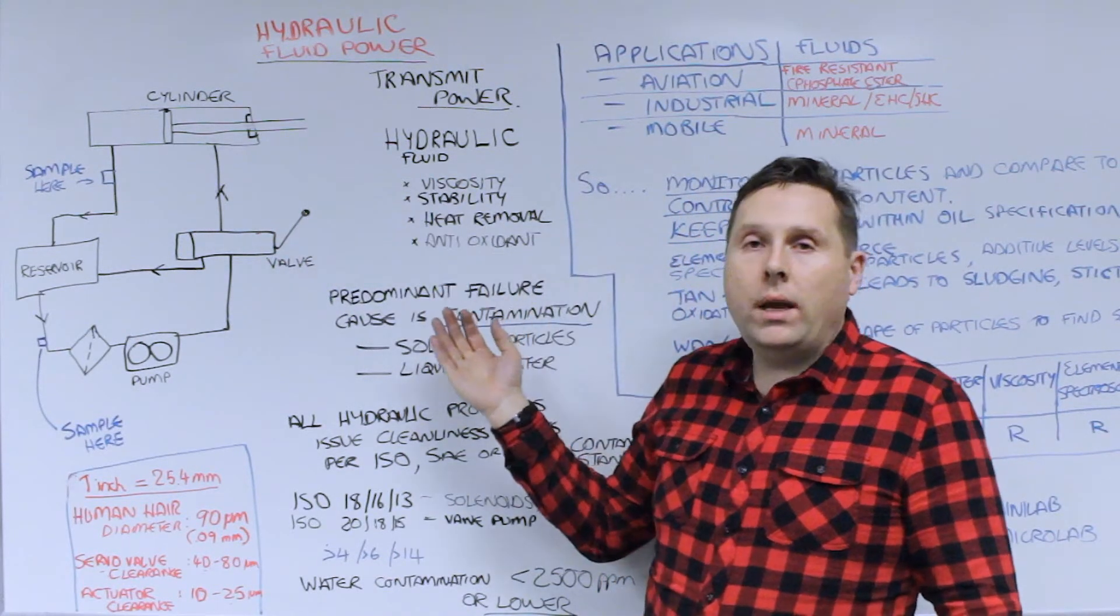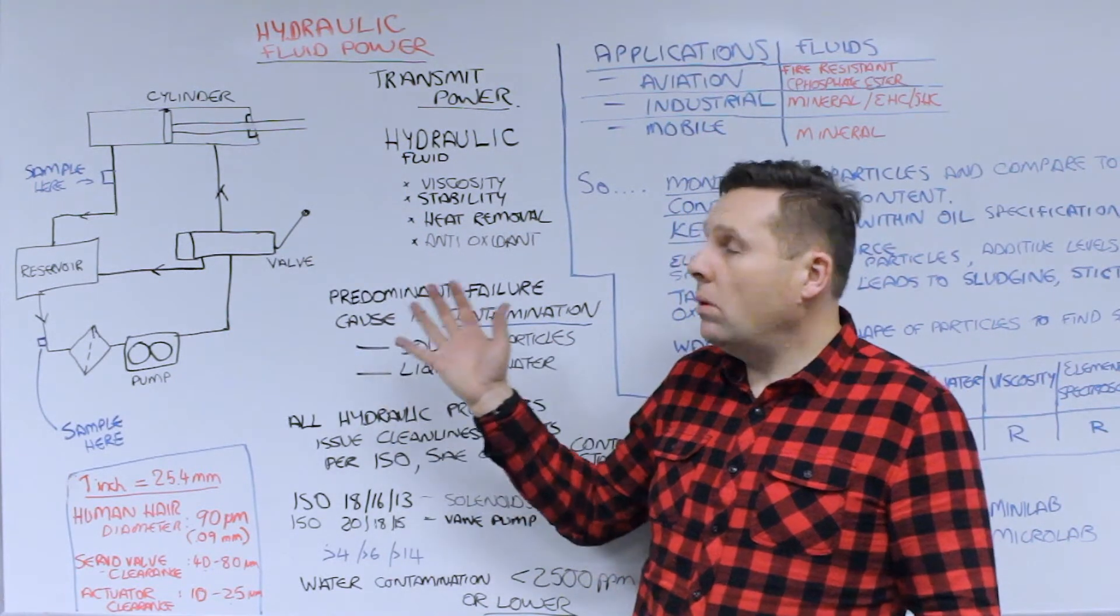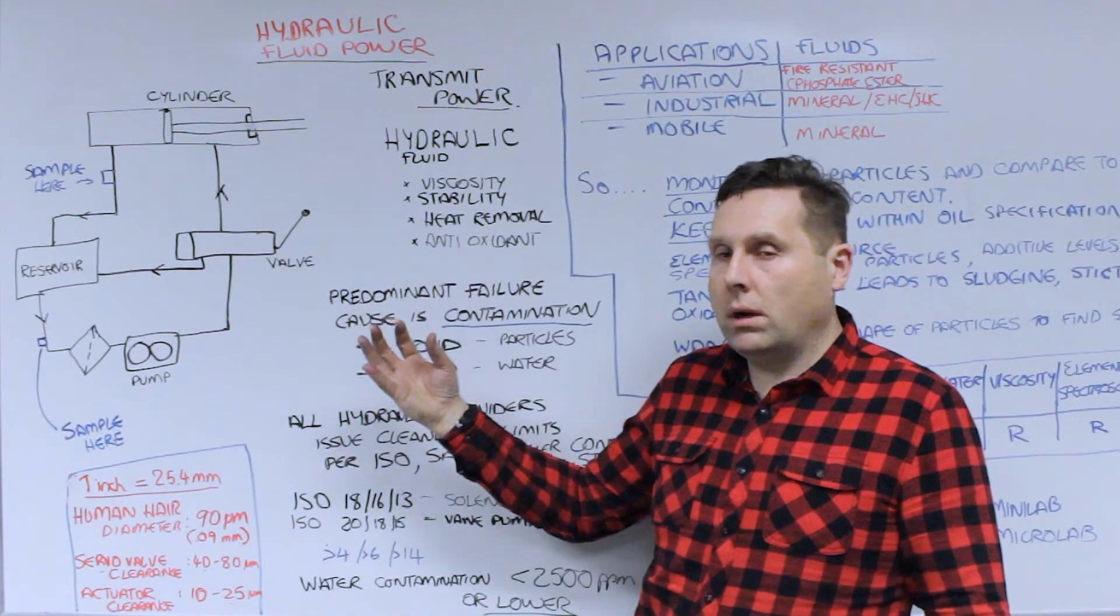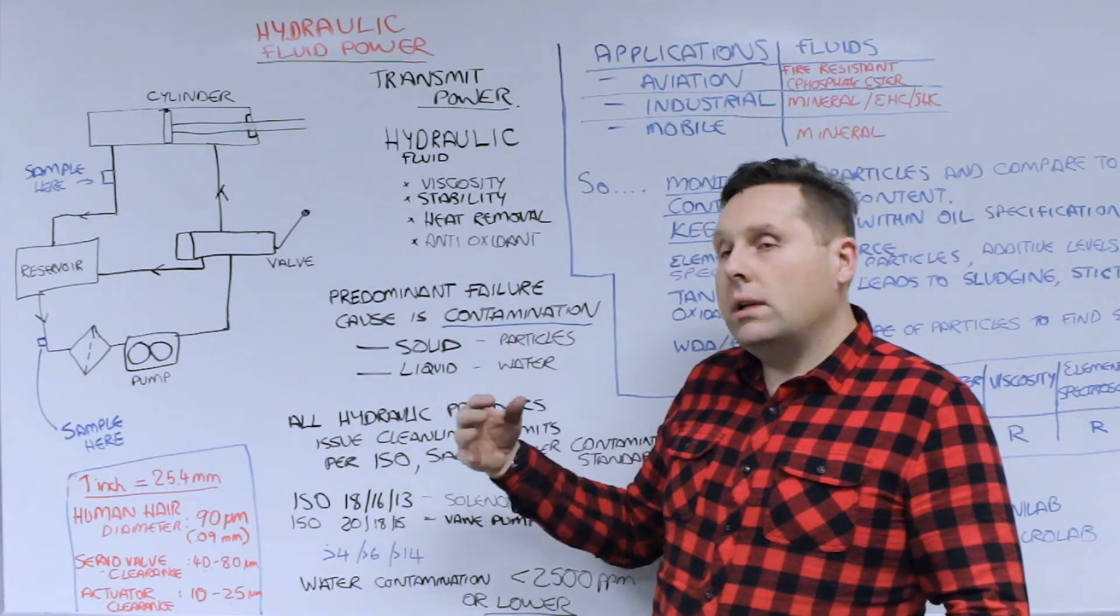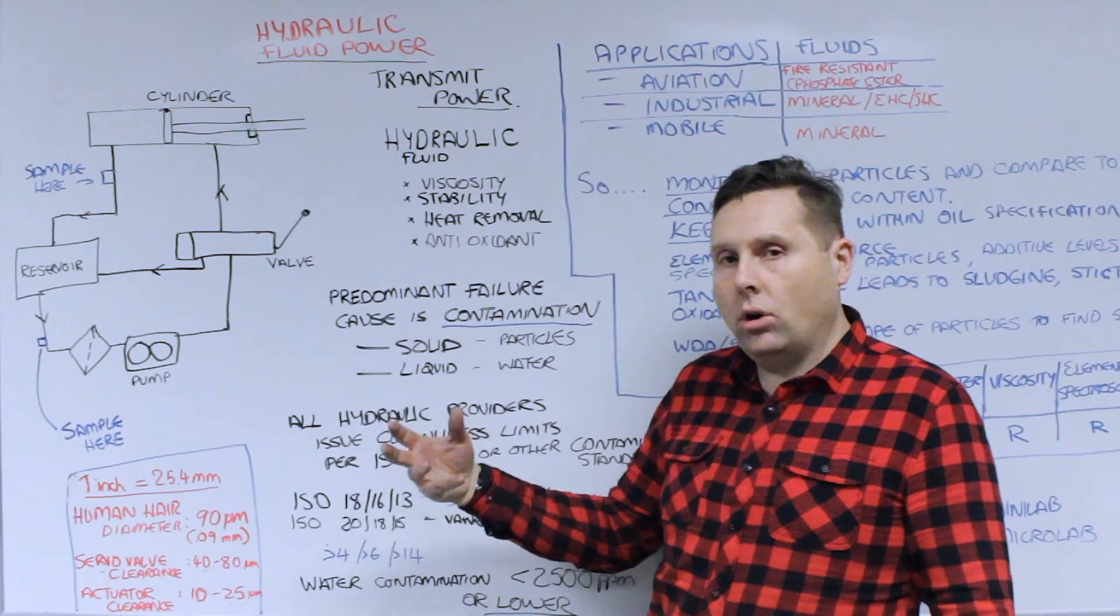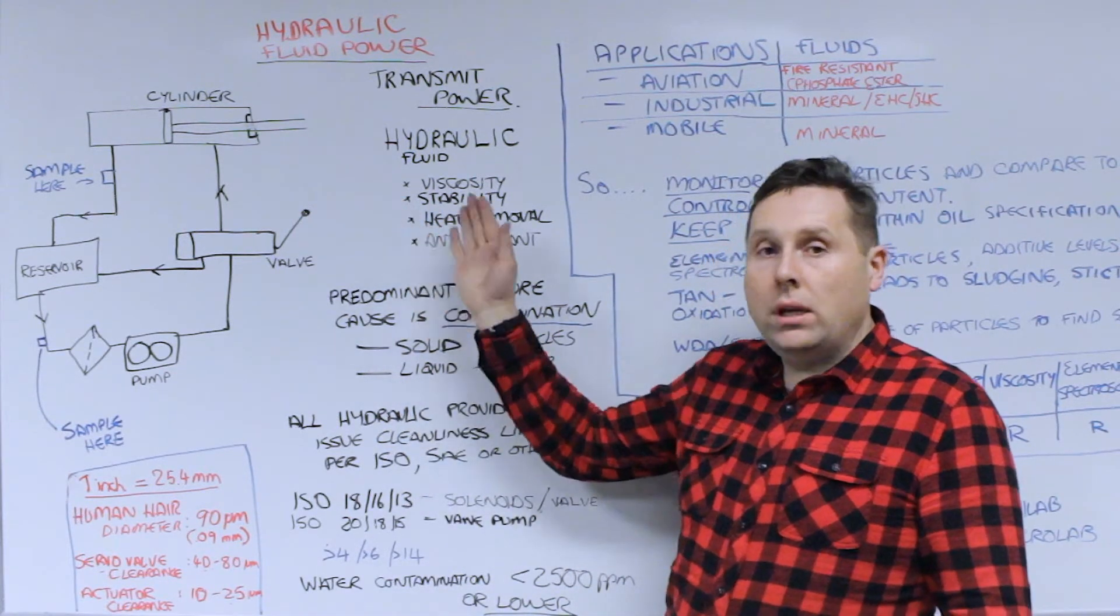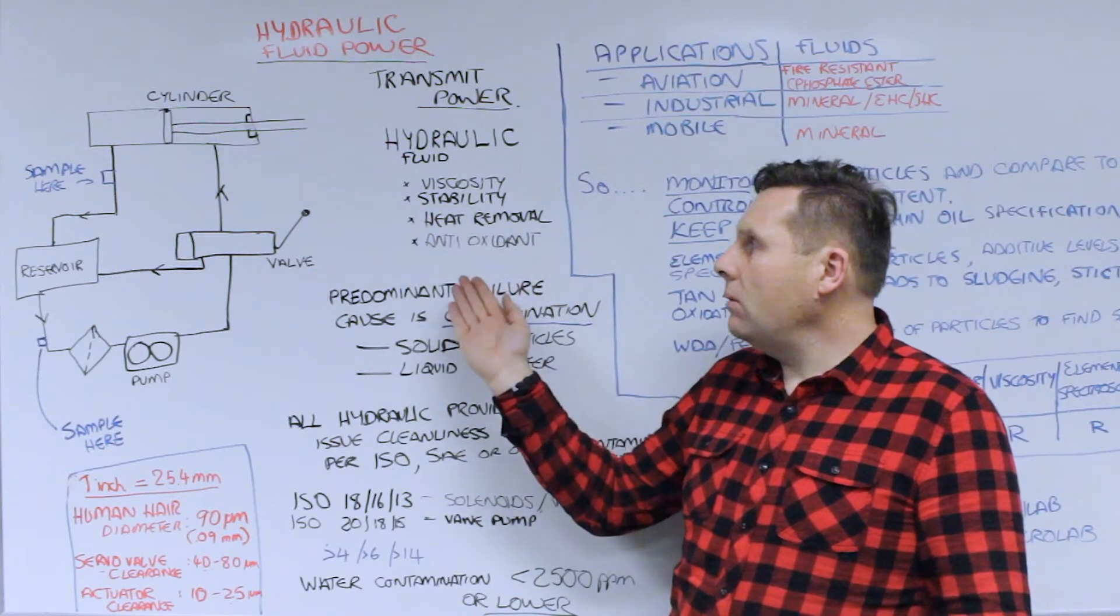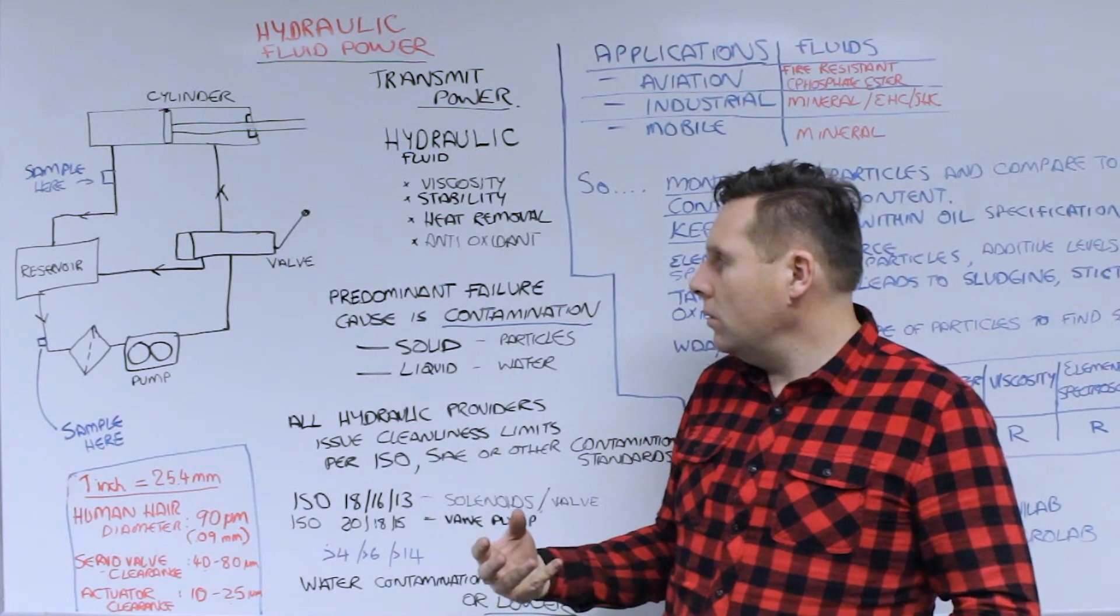The big concern we have is that the fluid is the lifeblood of the system. So we want to make sure that fluid is meeting its operational requirements. Hydraulic fluid is generally selected. It's typically a hydrocarbon based product but not always. It's chosen for its viscosity because you need that for transmitting power. It needs to be a low viscosity. Stability, heat removal, antioxidant, long life. These are why we choose fluids.